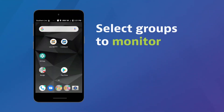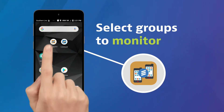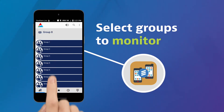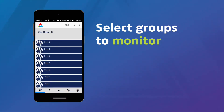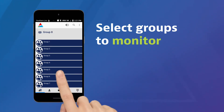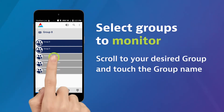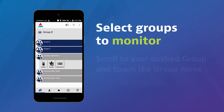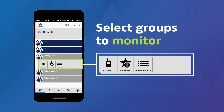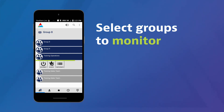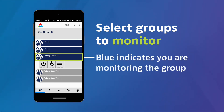Link MCPTT makes it easy to monitor up to 16 different talk groups at a time. From the Groups tab, scroll to your desired group and touch the group name. A sub-navigation bar will appear. Touch Connect to begin monitoring the group. The group name will turn blue to indicate that you are monitoring the group.